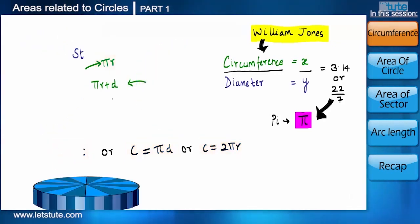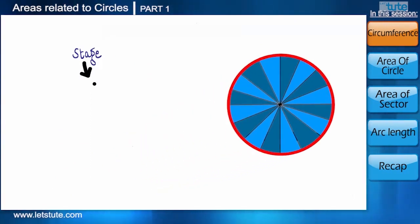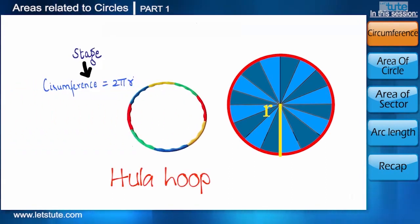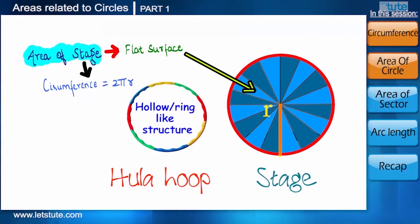In the circus, we have a stage in the center, which is also circular in shape. Here also we can find its circumference if we know the radius of the stage. But there is a difference between hula hoop and the stage. Hula hoop was a hollow or ring-like structure. But stage is a flat surface having an area enclosed inside the boundary.